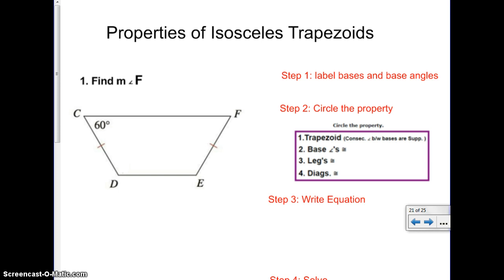Over here you see your properties, here's your four. Trapezoid, remember the consecutive angles between the bases are supplementary? That's a carryover. But then number two, your base angles are congruent. Number three, your legs are congruent. Number four, your diagonals are congruent. But step one, if you look, has a change. Label the bases and the base angles.